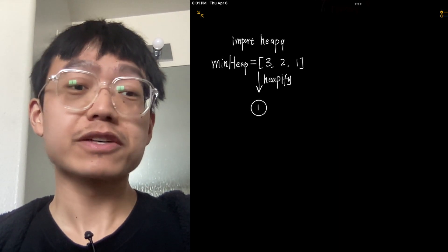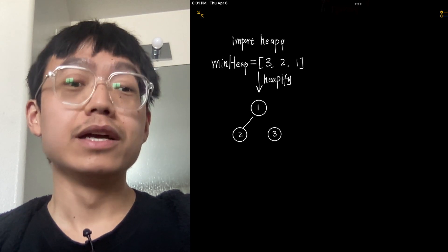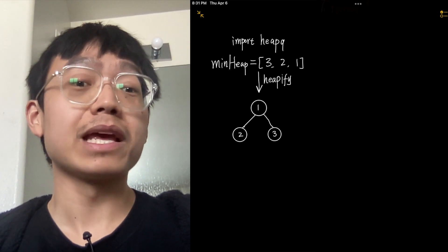The heapq.heapify function is used to convert a list into a heap data structure, which is a binary tree that satisfies the heap property.